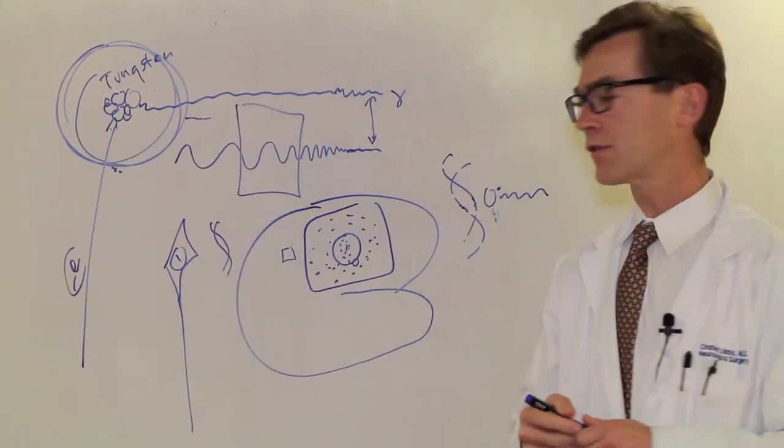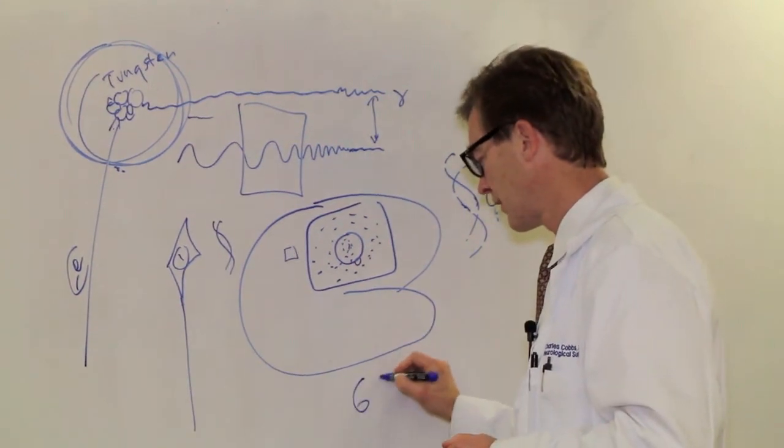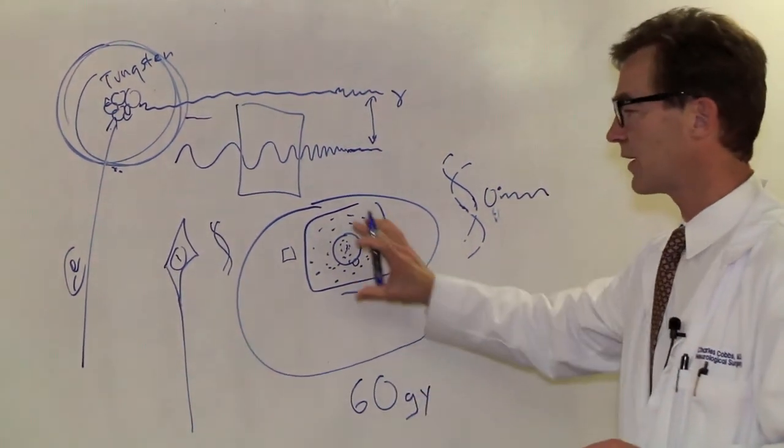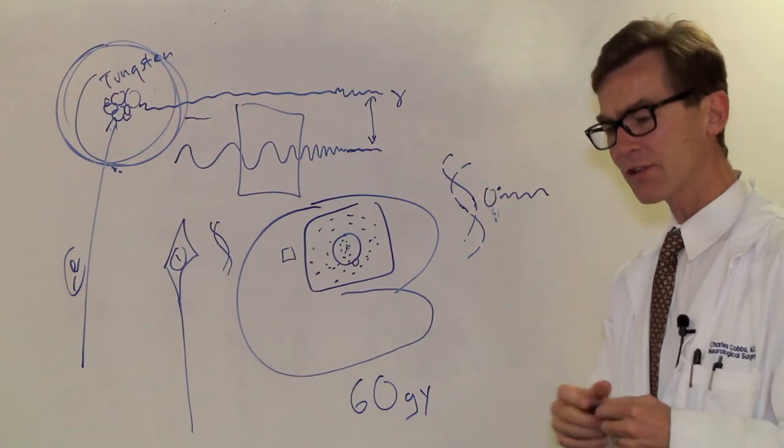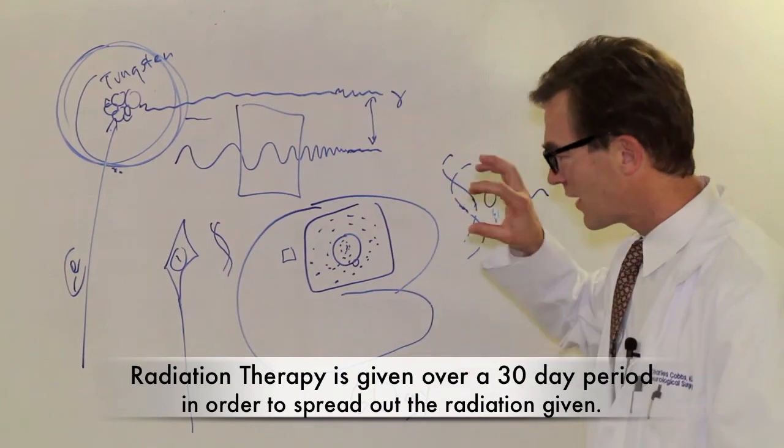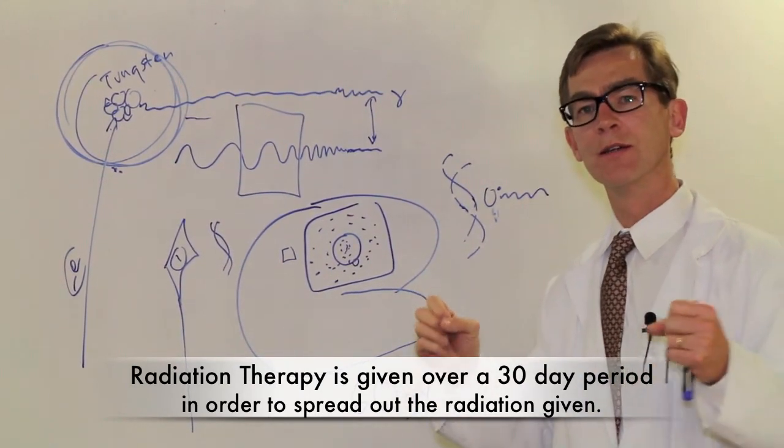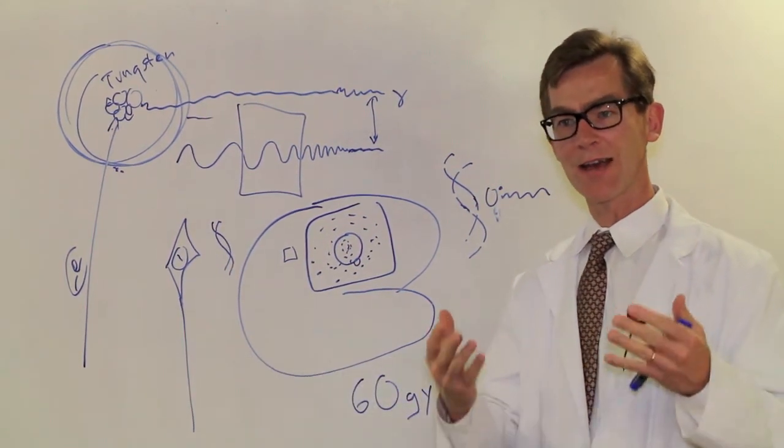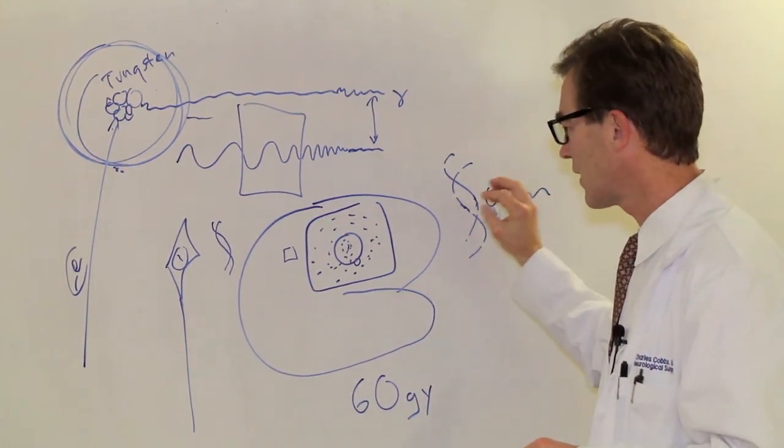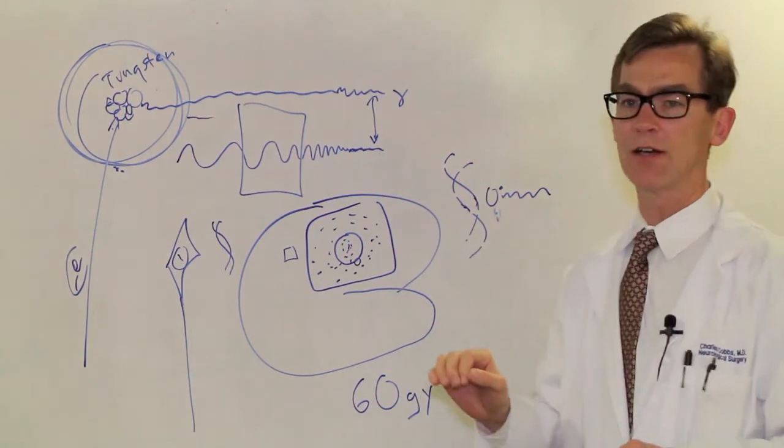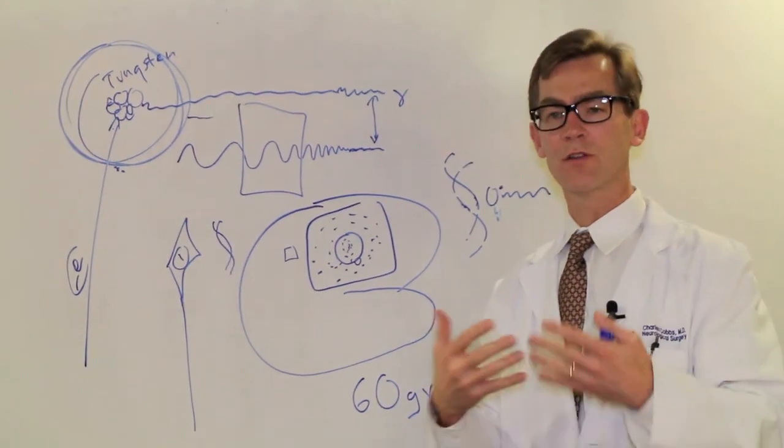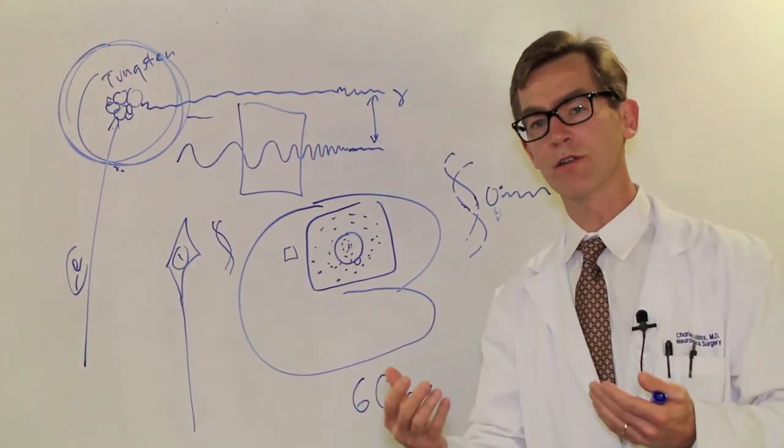That's to a total dose of 60 gray. 60 gray is a way of measuring how much radiation total has been given, and it's given in fractions over those 30 doses. Because if you gave all that at once it would cause massive cell death because it would be too much for the cells to take at that amount. But if it's given at intervals, you can knock out the rapidly dividing cells while the cells that are not rapidly dividing can compensate and be fixed, so that the balance of effect is much greater on the tumor cells.